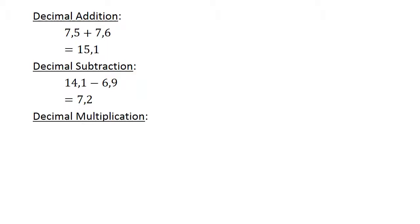Decimal multiplication. 0.9 times 0.039. You may use a calculator. Equals 0.0351.